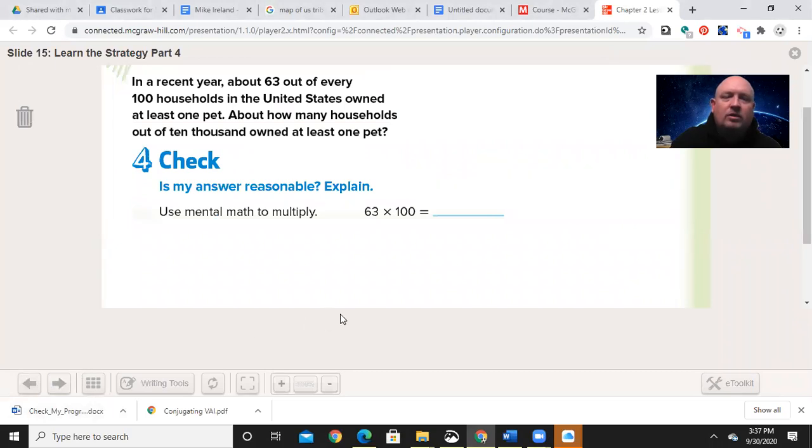You'll see the answer key there. Now let's check our work. What's 63 times 10? 63 times 1 is 63 plus two zeros, 6,300. You got this.